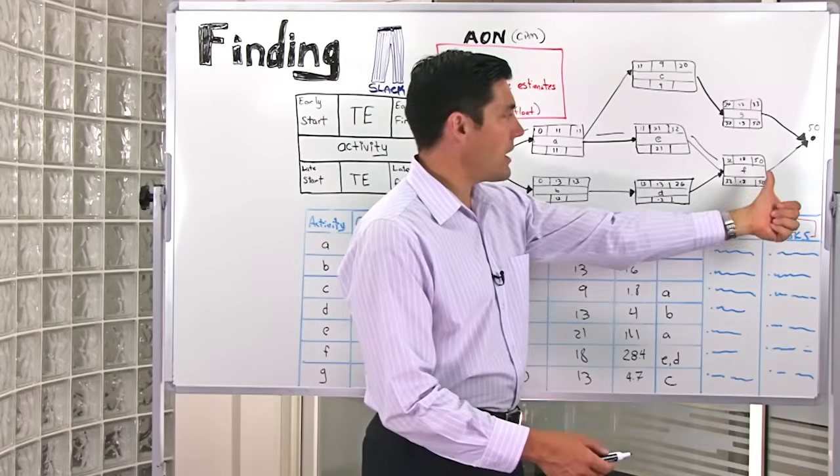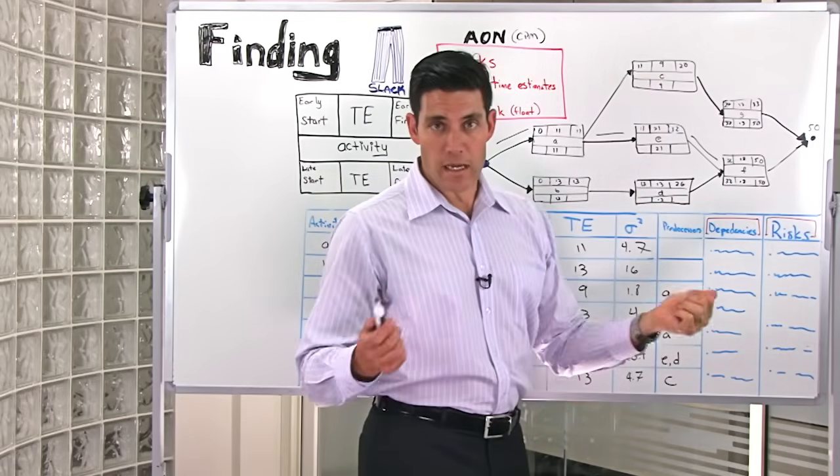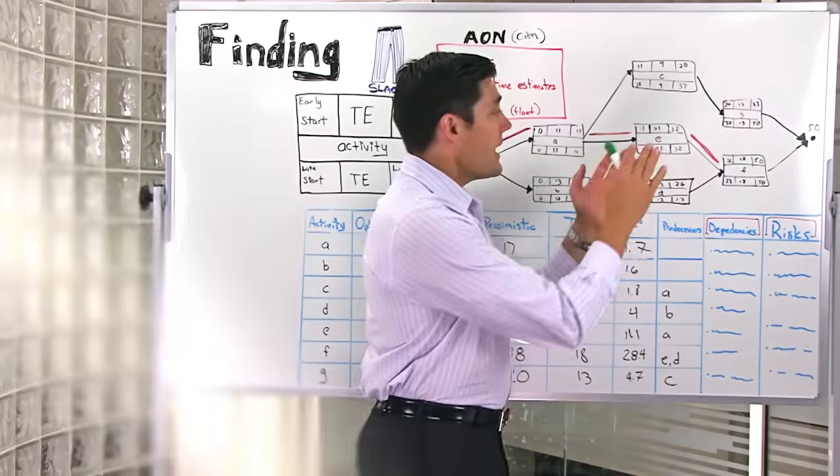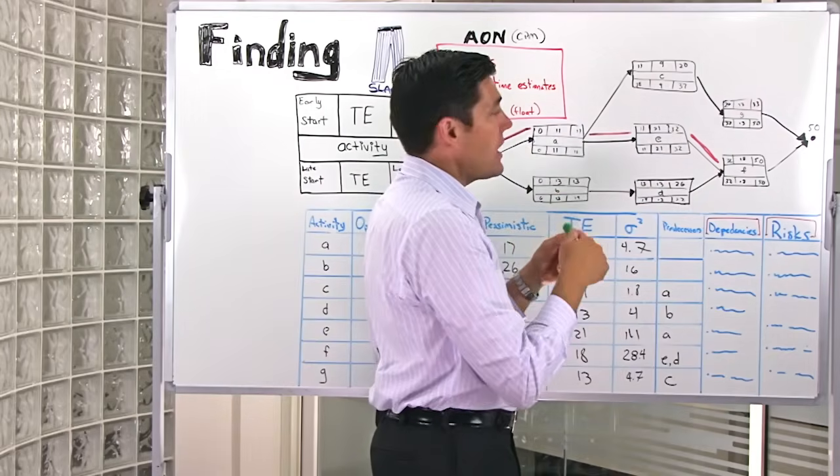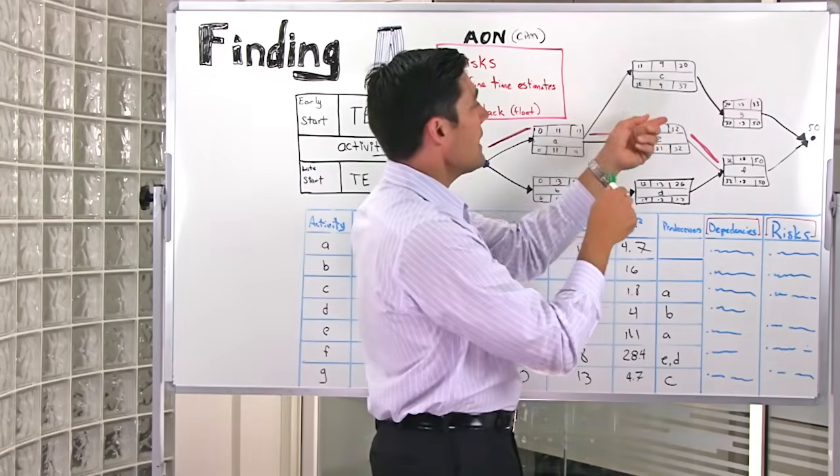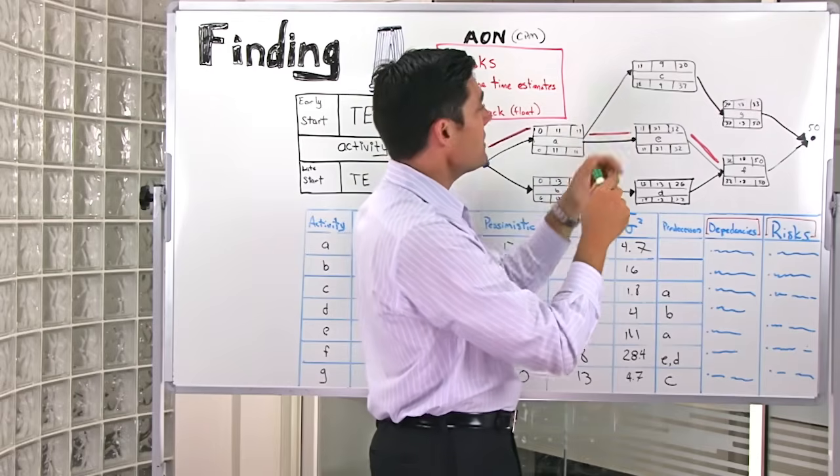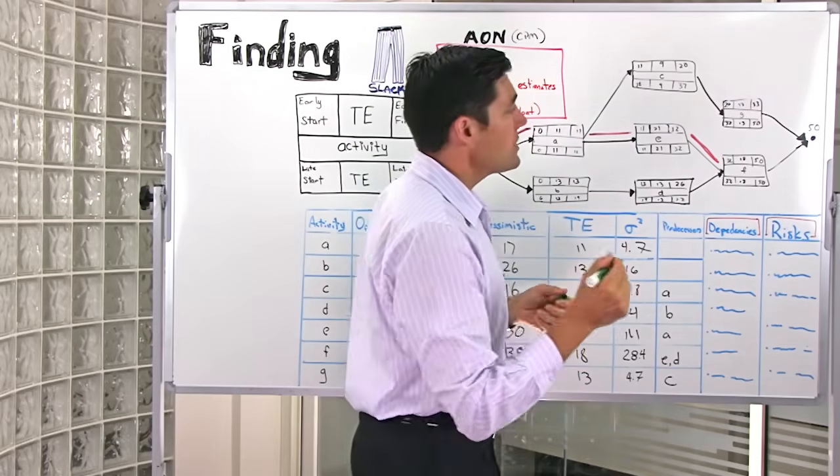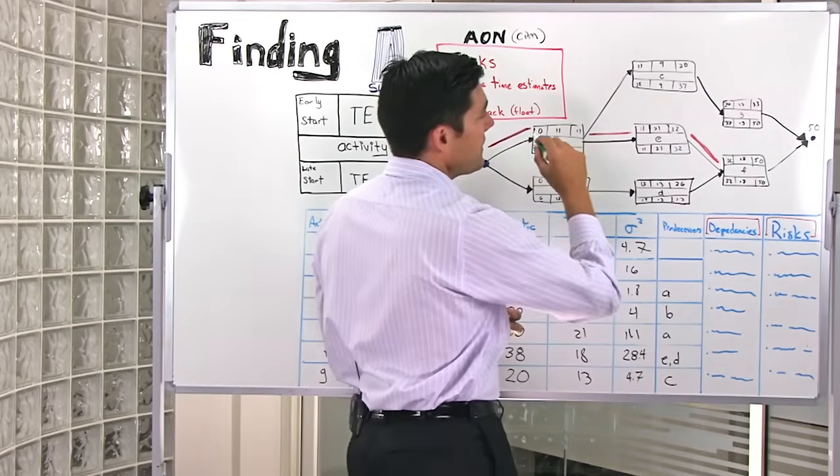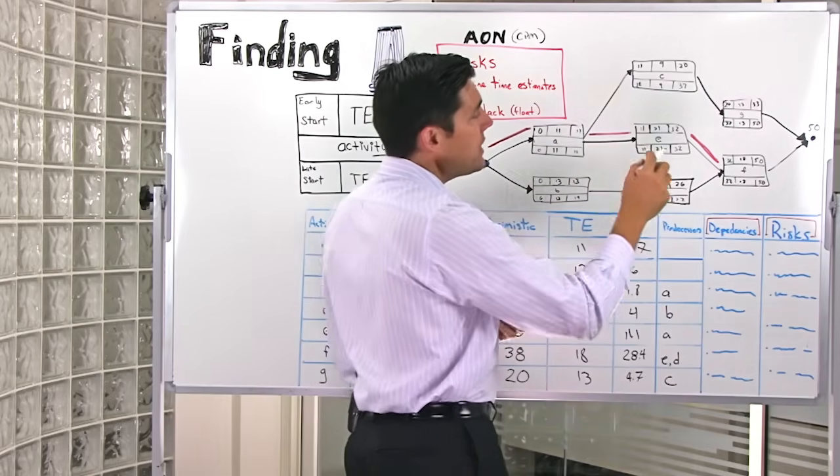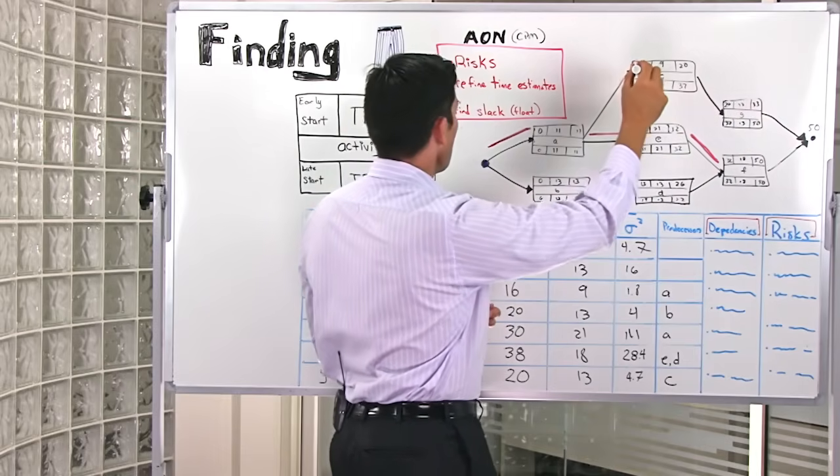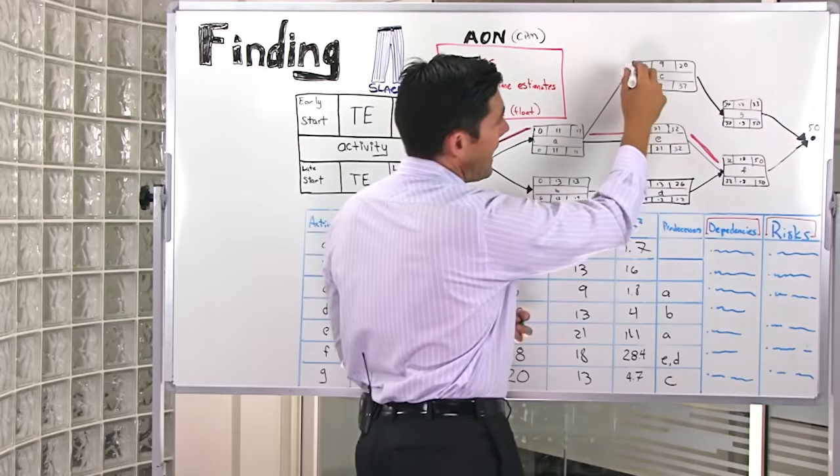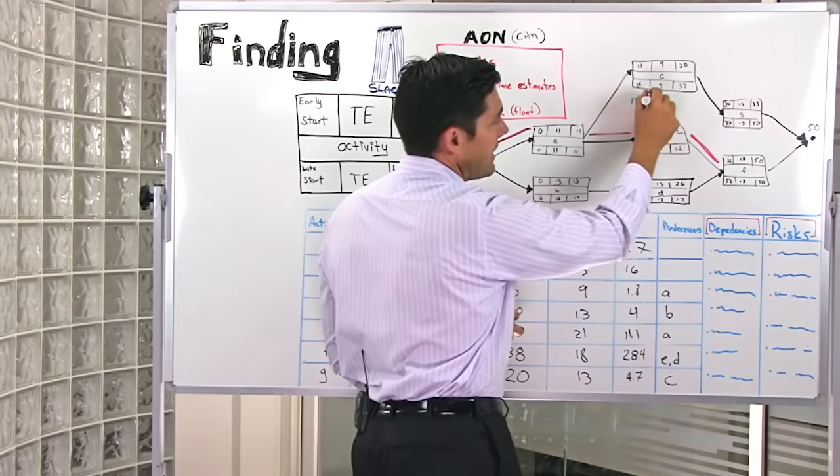Let's go back through the diagram, going backwards, and see where else we can calculate some slack. Now that I've gone backwards through the diagram and calculated all the late finishes and late starts, I can start to look at where my slack is in the schedule. So let's take the top path, the A-C-G path. We notice that there's a difference between the early start and the late start, and that difference is 17 days.